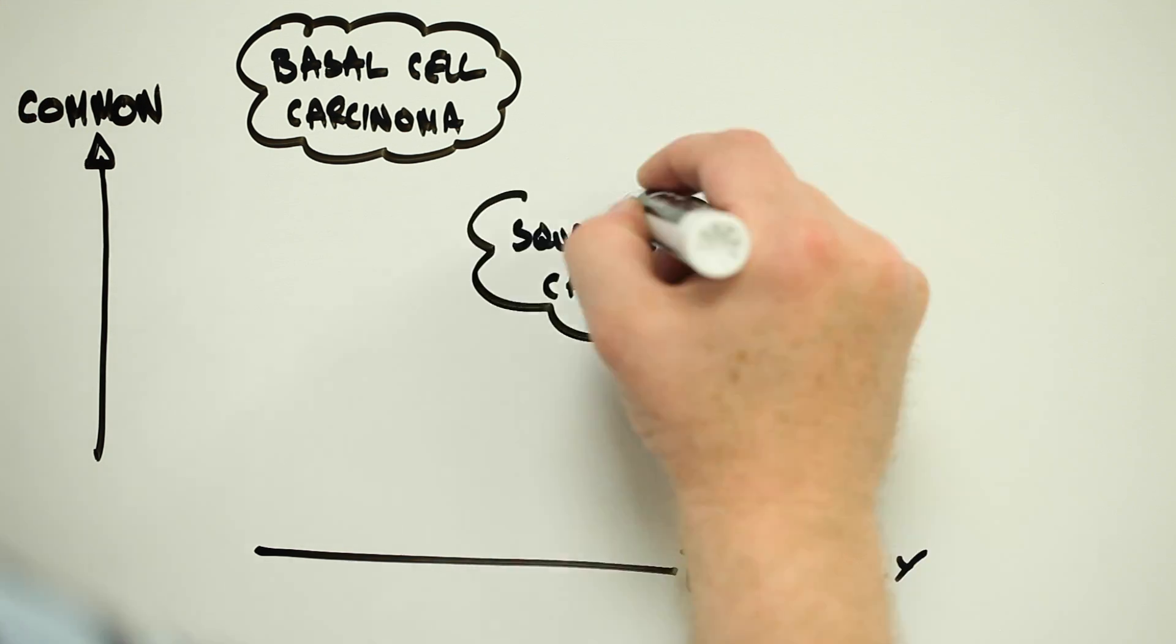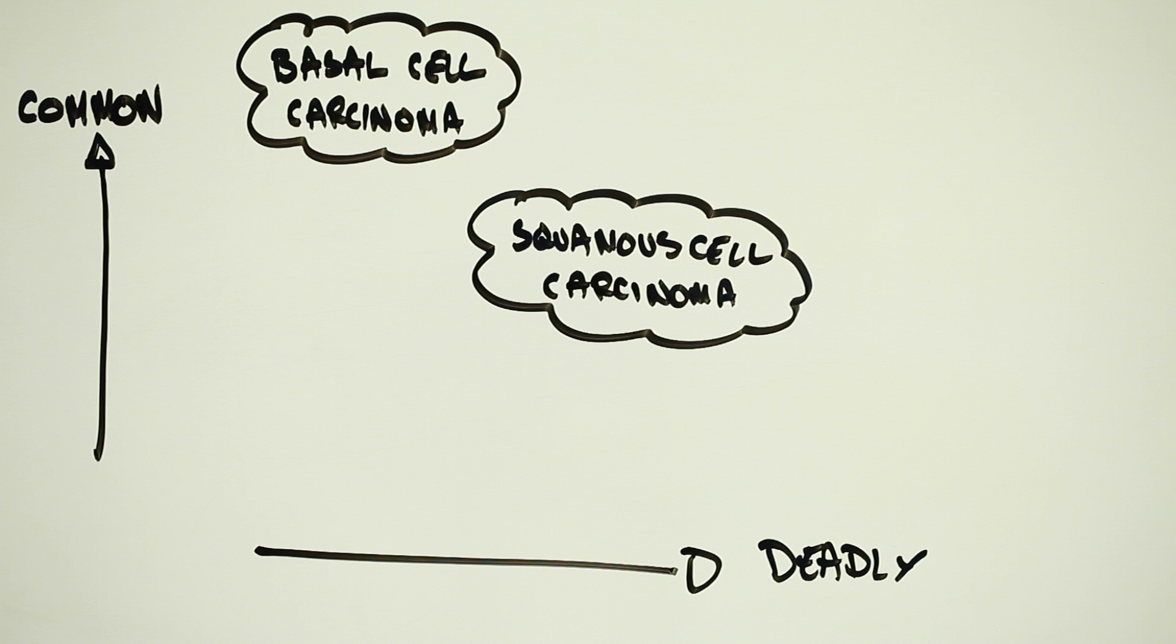The second most common form is squamous cell carcinoma. Around 700,000 cases of squamous cell carcinoma are diagnosed each year in the US. And in 2012, somewhere between 4,000 and 9,000 people are estimated to have died of the disease.